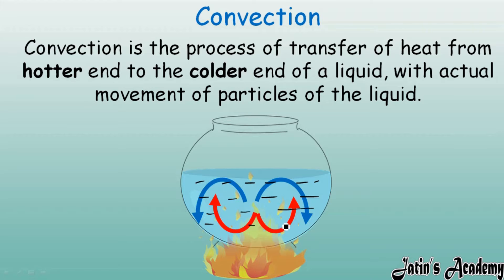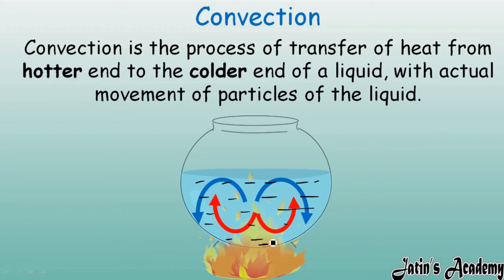The particles near the flame take heat from it, become hot, and start moving upward. As they move upward, they push the colder particles downward. When the colder particles come near the flame, they also become hot and move upward. Like this, all hotter particles move up, colder particles move down, and a convection current sets up in the liquid, heating the full amount of liquid.